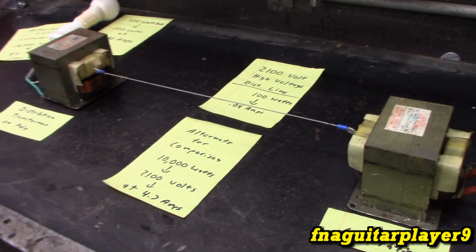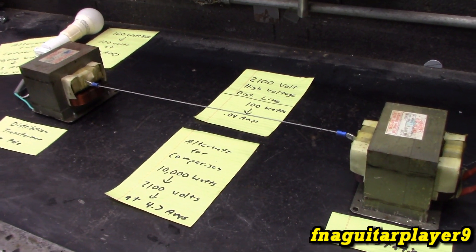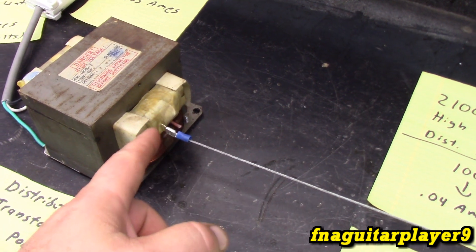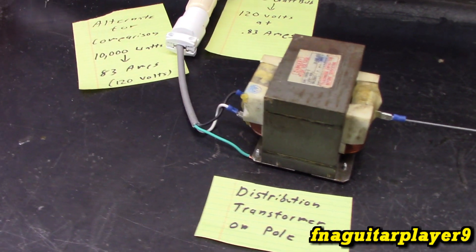First of all, high voltage will transmit very long distances without much of a voltage drop. And if it does have a voltage drop, there's always different taps on the high voltage side of this to compensate for it.